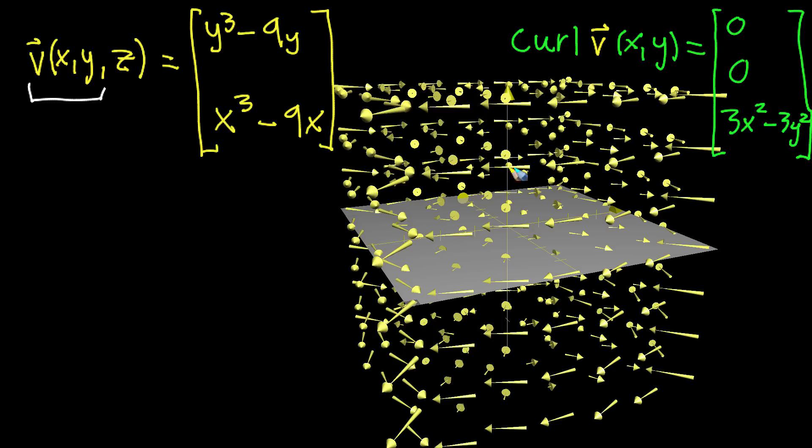And I want to be considering these as vectors in three dimensions, so rather than just saying that it's got x and y components, I'm going to pretend like it has a z component, it has a z component that just happens to be zero for this case.